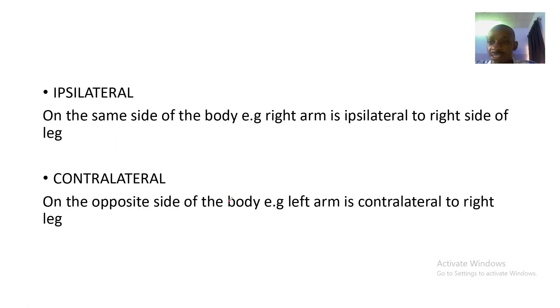Ipsilateral means same side. Ipsilateral is on the same side of the body where we say that the right hand is ipsilateral to the right leg. So instead of saying the right leg is on the same side with the right arm, you say that right arm is ipsilateral to the right leg. This is basically the dictionary of medicine, learning the terms in medicine.